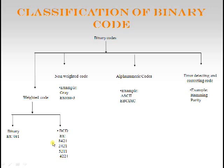Non-weighted codes include Gray code and X3, which we will see later. Alphanumeric codes are mainly used for representing alphabets and numerics. Error detection and correction codes are used in communication — when transmitting data there may be noise introduced into the message, and these codes detect and correct those errors.